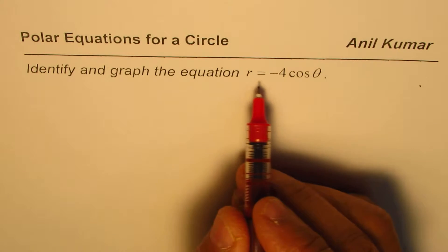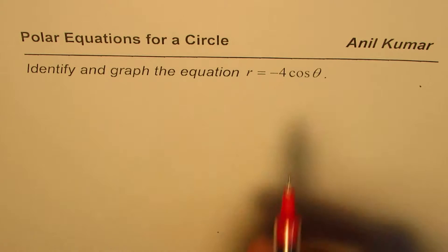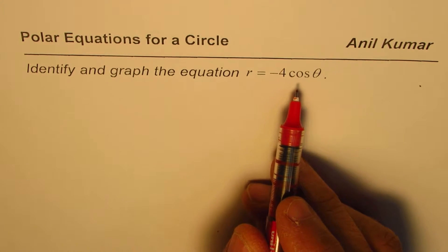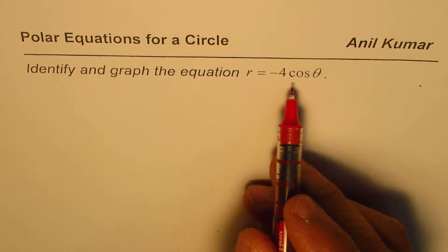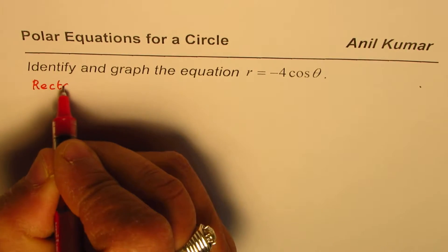Now, this equation r equals minus 4 cosine theta is in polar form, and we are not very familiar with it, but it does represent a circle. To see it clearly or to understand, what we will do is we will convert it into rectangular form, in terms of x and y.